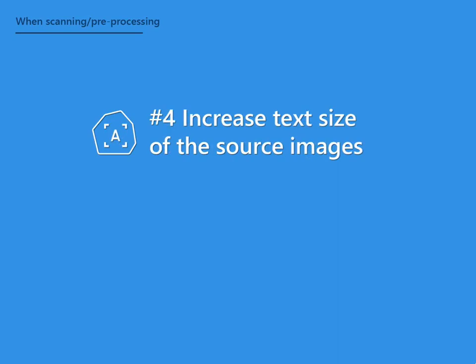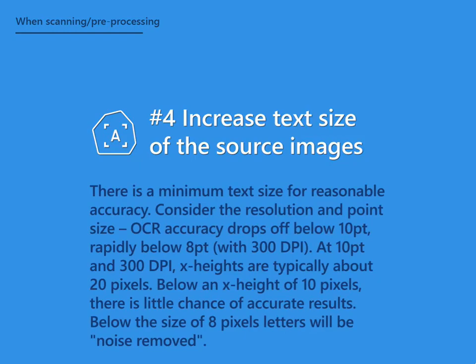Tip 4: Increase the Text Size of the Source Images. There is a minimum text size for reasonable accuracy. Consider the resolution as well as point size — OCR accuracy drops off below 10 points, and rapidly below 8 points, at 300 DPI. At 10 points and 300 DPI, X-heights are typically about 20 pixels. Below an X-height of 10 pixels, you have very little chance of accurate results, and below 8 pixels, letters will be treated as noise and removed. In short, try to make sure that the text height is at least 20 pixels.